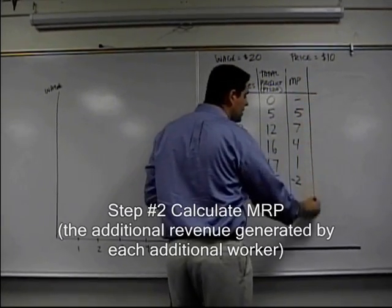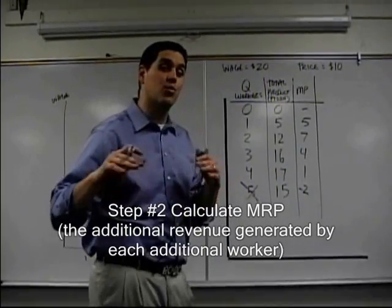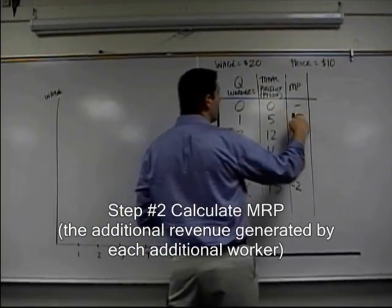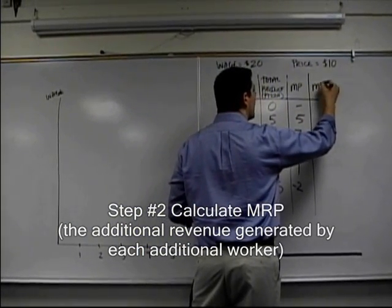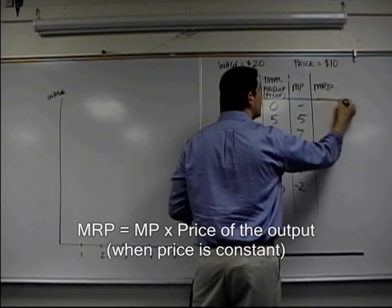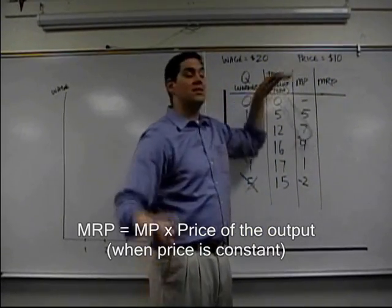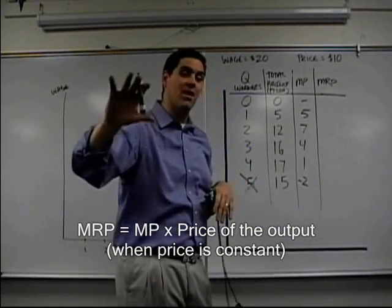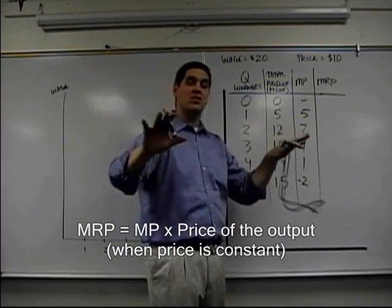Now that I know how much additional pizzas they made, I've got to convert that into how much revenue they brought in. Well, I have to multiply the marginal product times the price, and that will give me the marginal revenue product. And the reason why is this price is set by the market, and that's a perfectly competitive product market. So the price isn't going to change. The price is set.